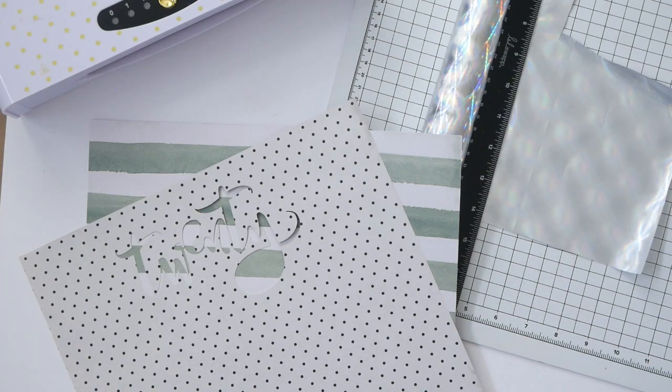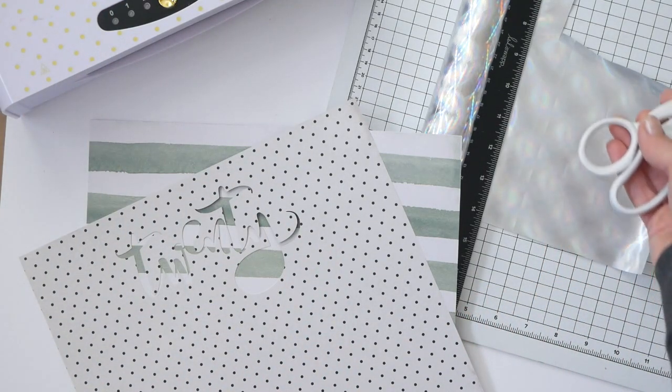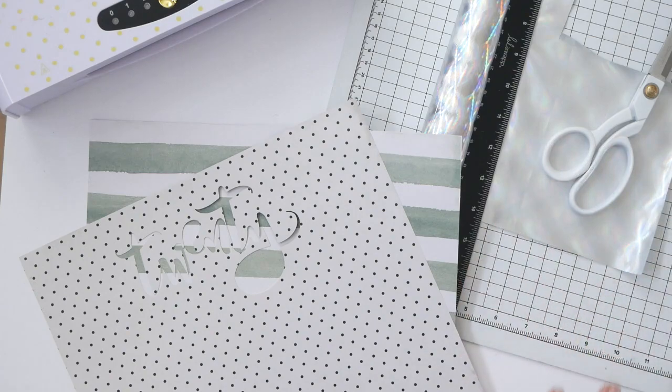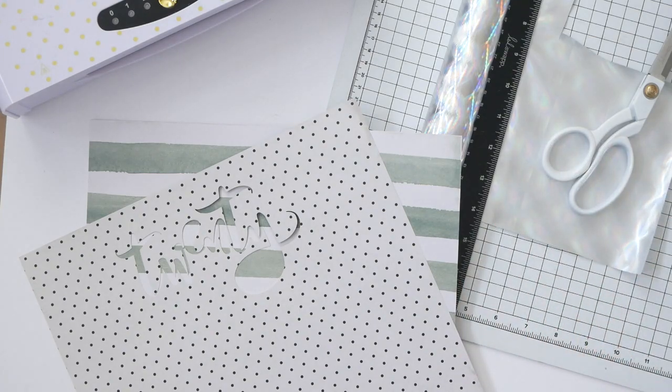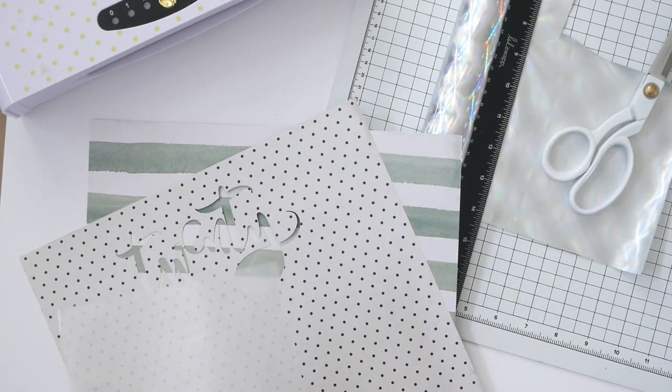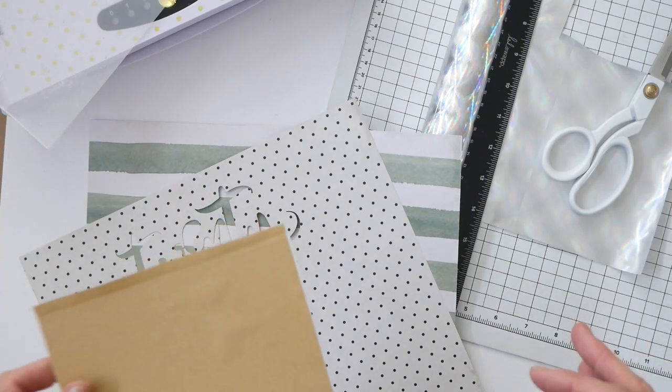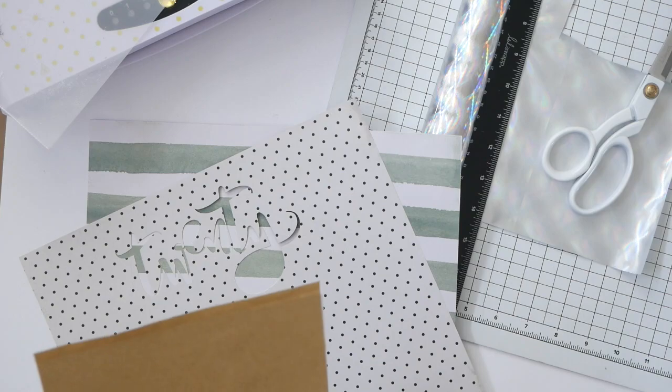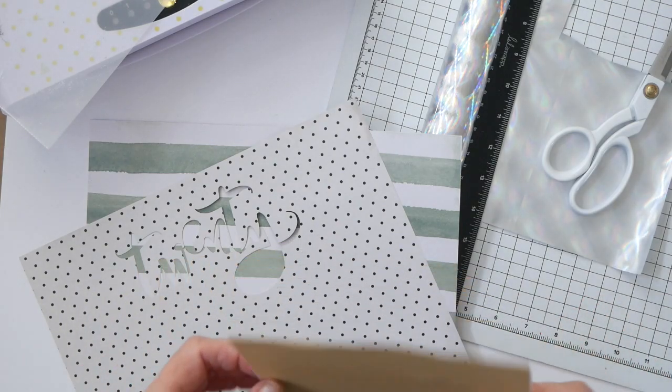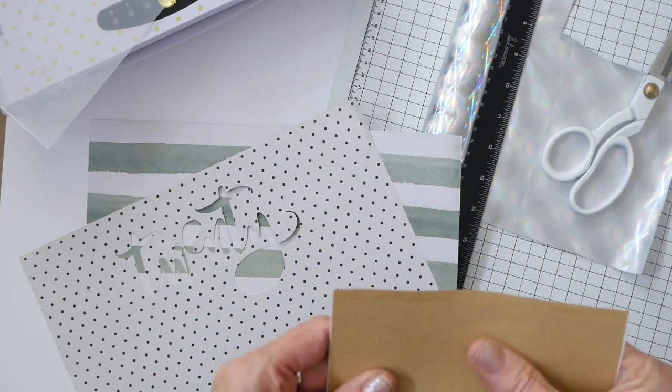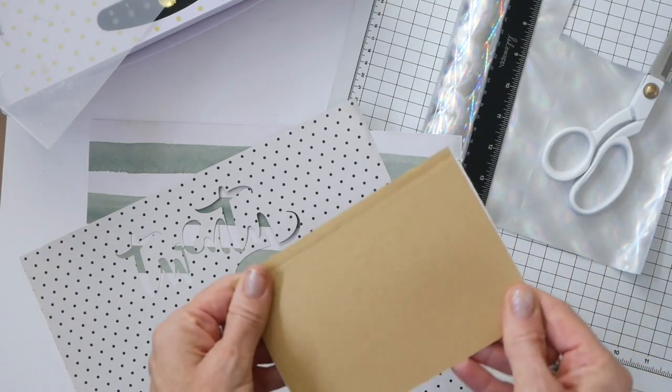What you're gonna need if you want to follow along here is a Minc machine, Minc foil, cutting mat and scissors to help get that cut, and a carrier folder for the Minc machine.